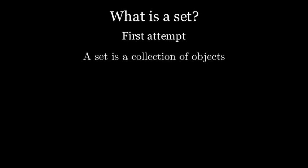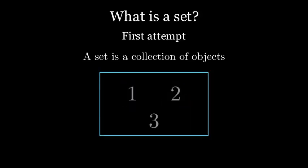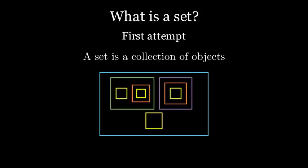So, what is a set? Here's a first attempt at an answer. A set is a collection of objects. What kinds of objects? Well, they could be just about anything. Shapes? Numbers? Whatever you want, really. Even other sets. In fact, in set theory, we're going to be interested only in sets that contain nothing but other sets, like this one here.